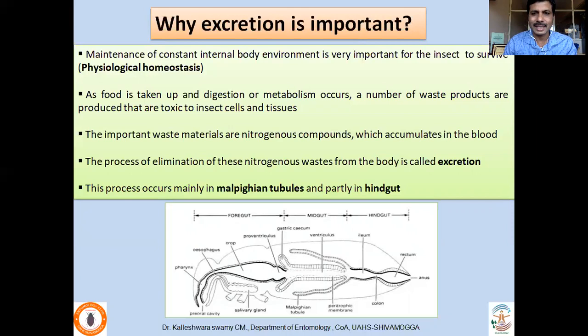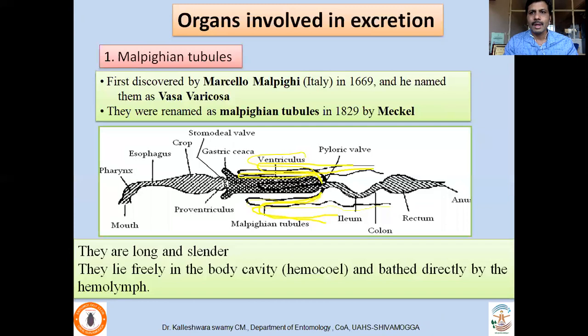The chief excretory organs in insects are the Malpighian tubules, and partly some excretion also occurs in the hindgut. The main organs involved in excretion are the Malpighian tubules, which are located at the junction of midgut and hindgut.